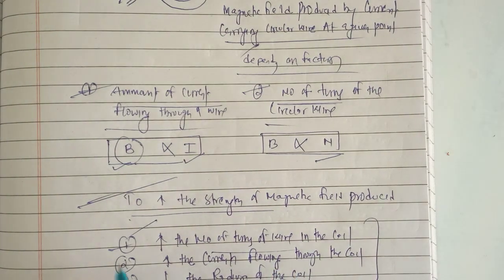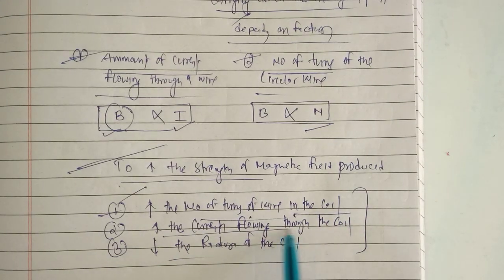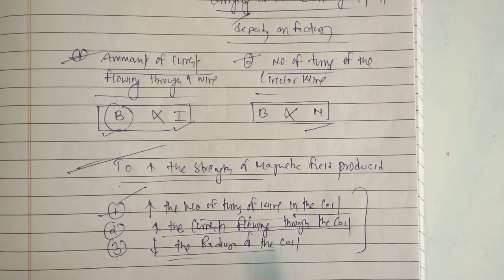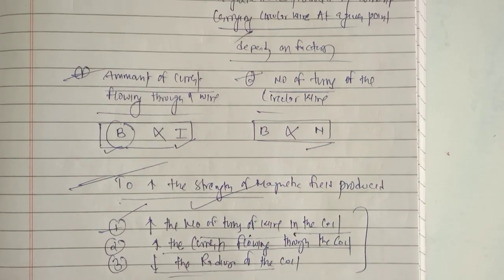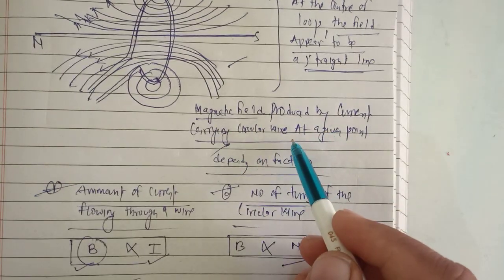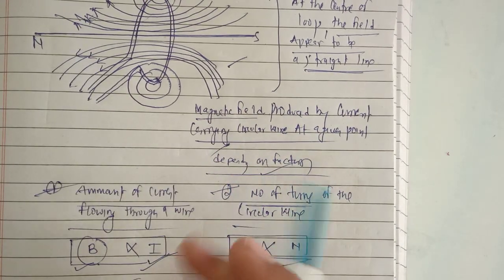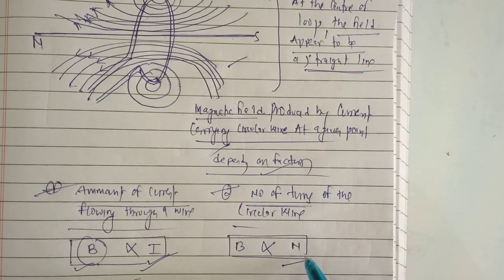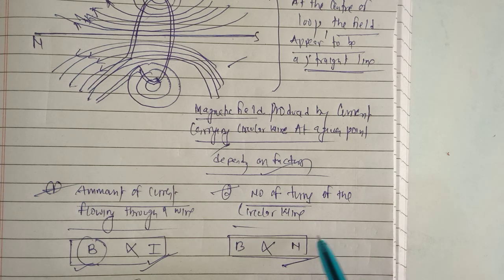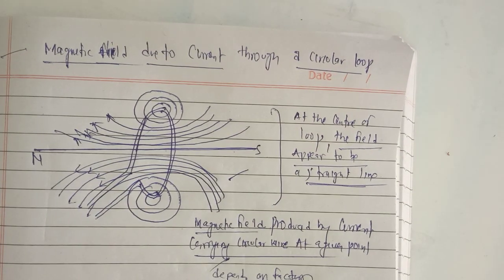So by increasing the number of turns in the coil, increasing the current flowing through the coil, and decreasing the radius of the coil, we can increase the strength of the magnetic field produced. The magnetic field produced by a current carrying circular loop depends on two factors: how much current is flowing in it, and how many number of turns of the circular wire are present. This is all about the magnetic field produced due to current through a circular loop.